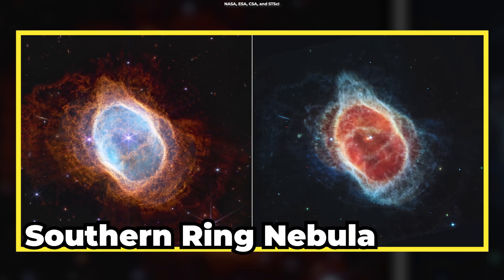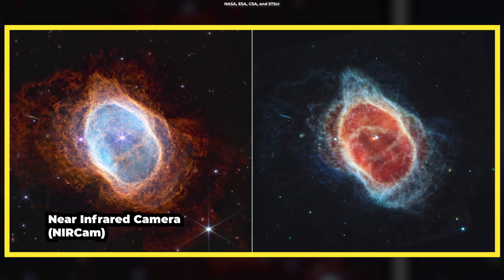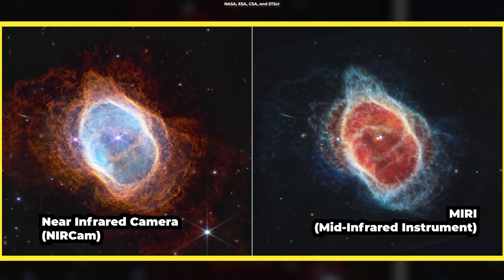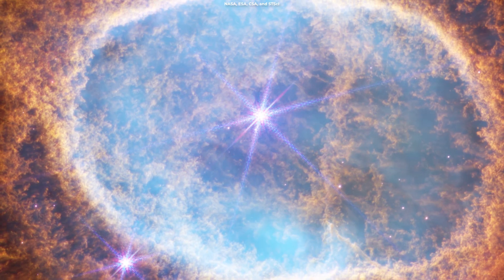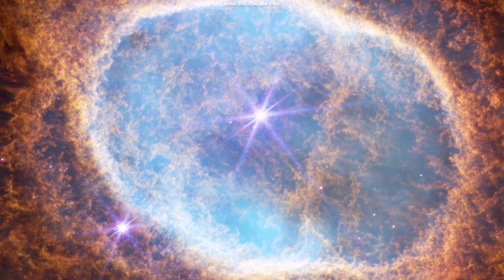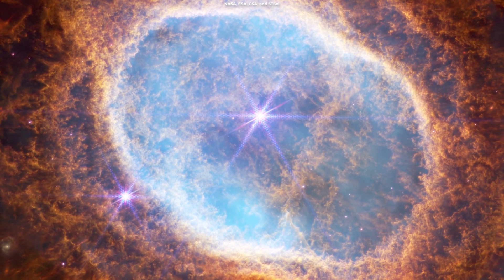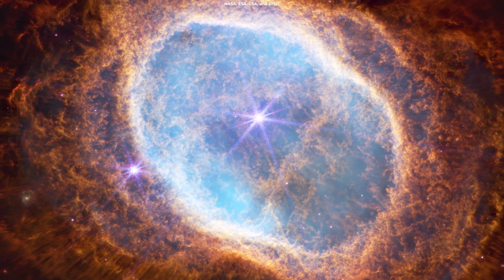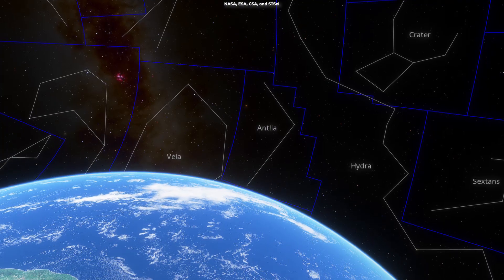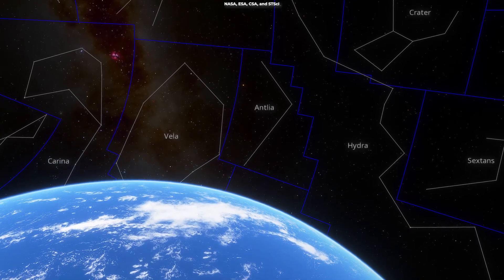The next picture is the Southern Ring Nebula. On the left is the image from Webb's near-cam, and on the right from the MIRI instrument. This is a planetary nebula, an expanding cloud of gas surrounding a dying star. It's almost half a light-year in diameter and lies about 2,000 light-years away from us.